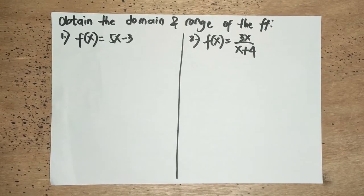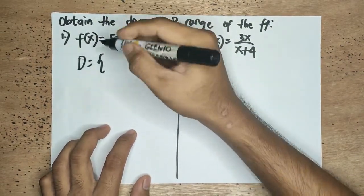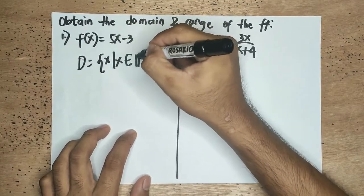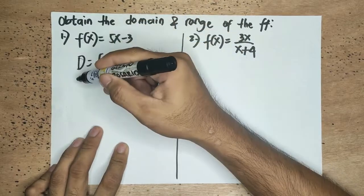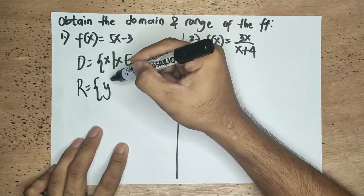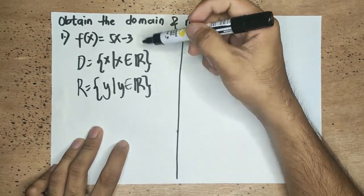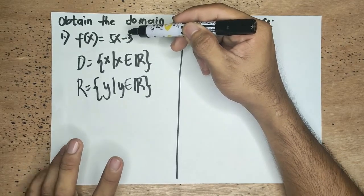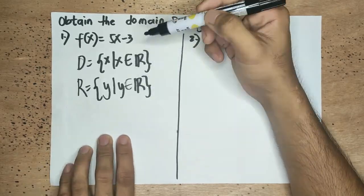In this example, we obtain the domain and range of the following functions. The first one: f(x) is equal to 5x minus 3. As you can see, that is a linear function. It has no denominator and no variable inside the radical symbol. This means automatically its domain is the set of all x's such that x is an element of real numbers. Similarly, since all real numbers are allowed, the range also has no restriction — it is also the set of real numbers.